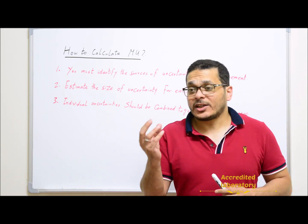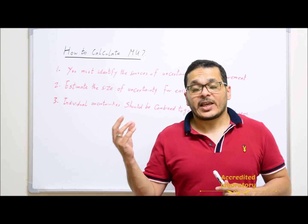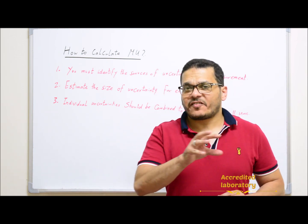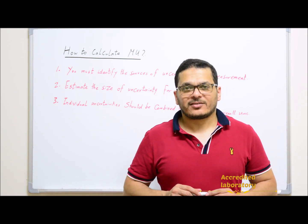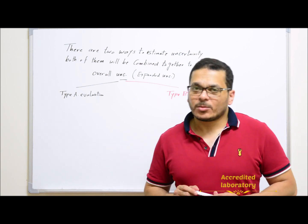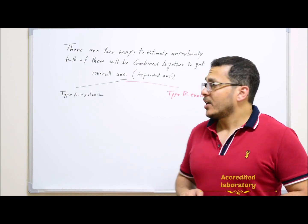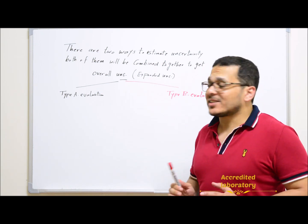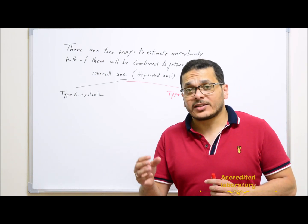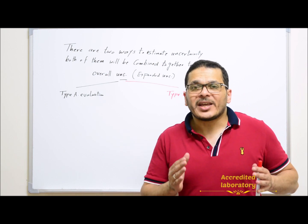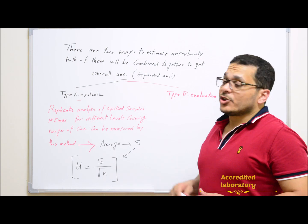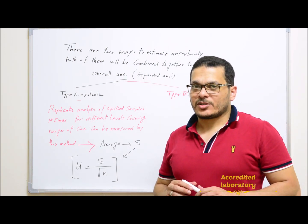Individual uncertainties should be combined together to get the overall uncertainty. All these uncertainties will be combined to get a value — as mentioned in the first lecture — which will be added to the final result to compensate for all effects coming from every step of measurement. There are two types of evaluation: Type A and Type B. Both will be combined to get the combined uncertainty and then the expanded uncertainty added to the final results.